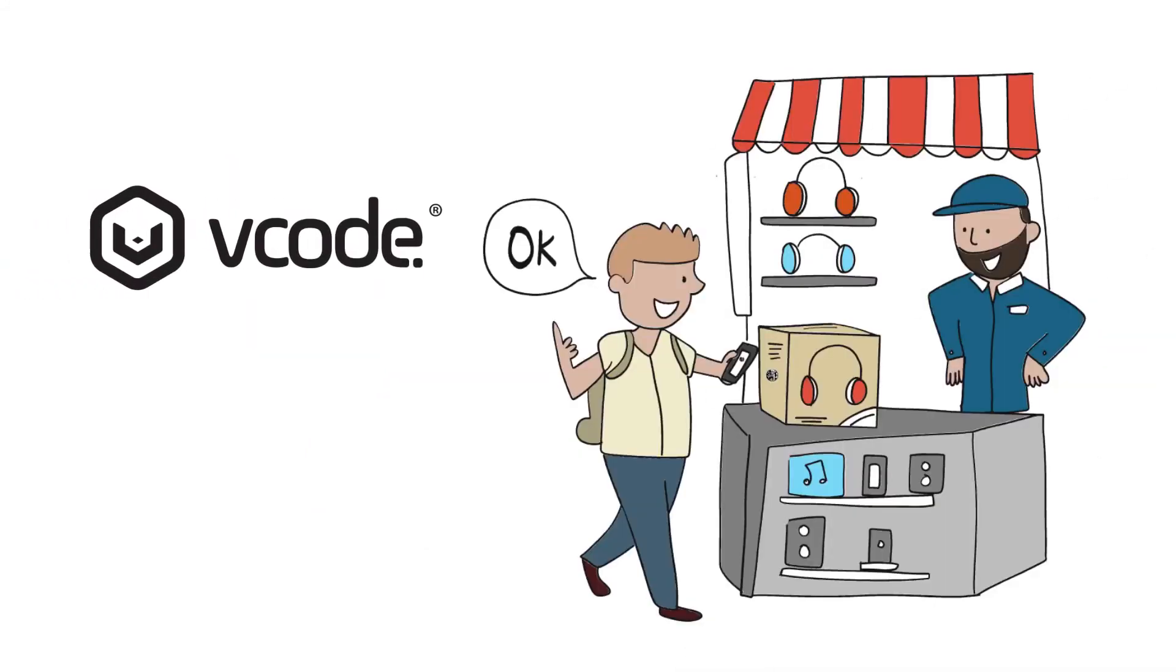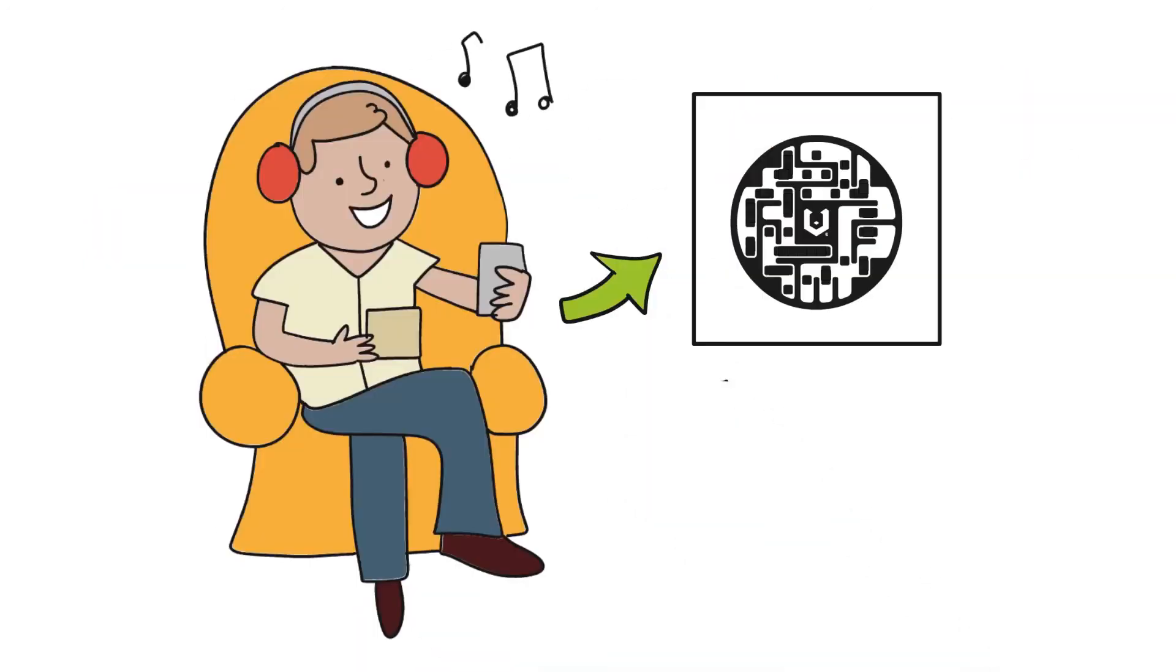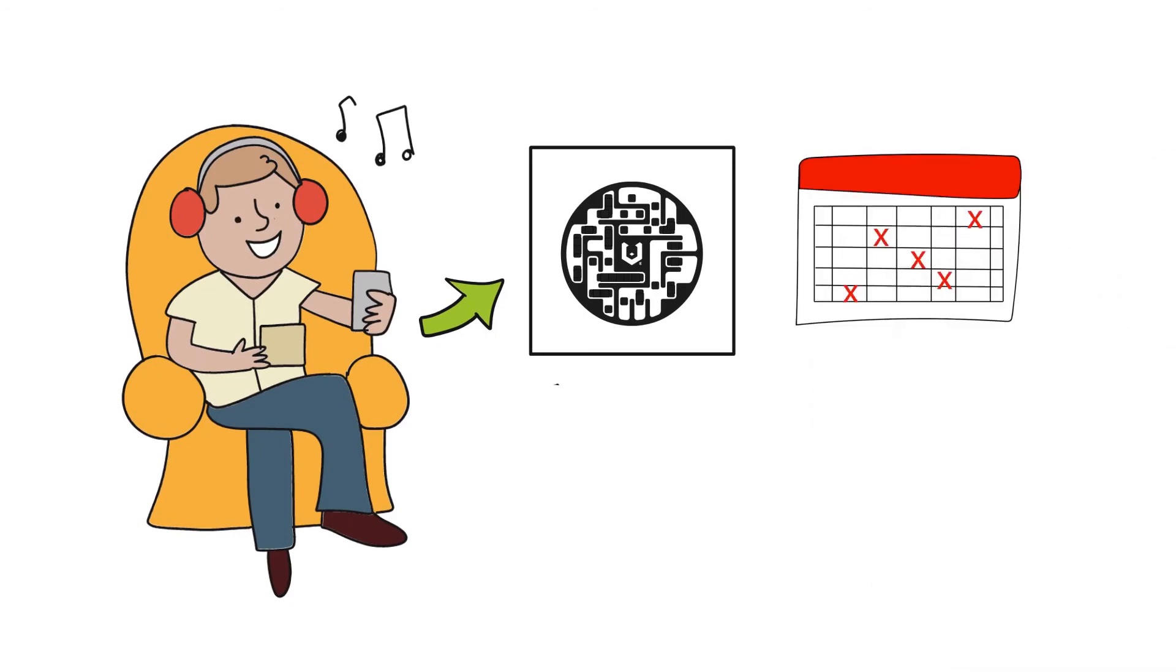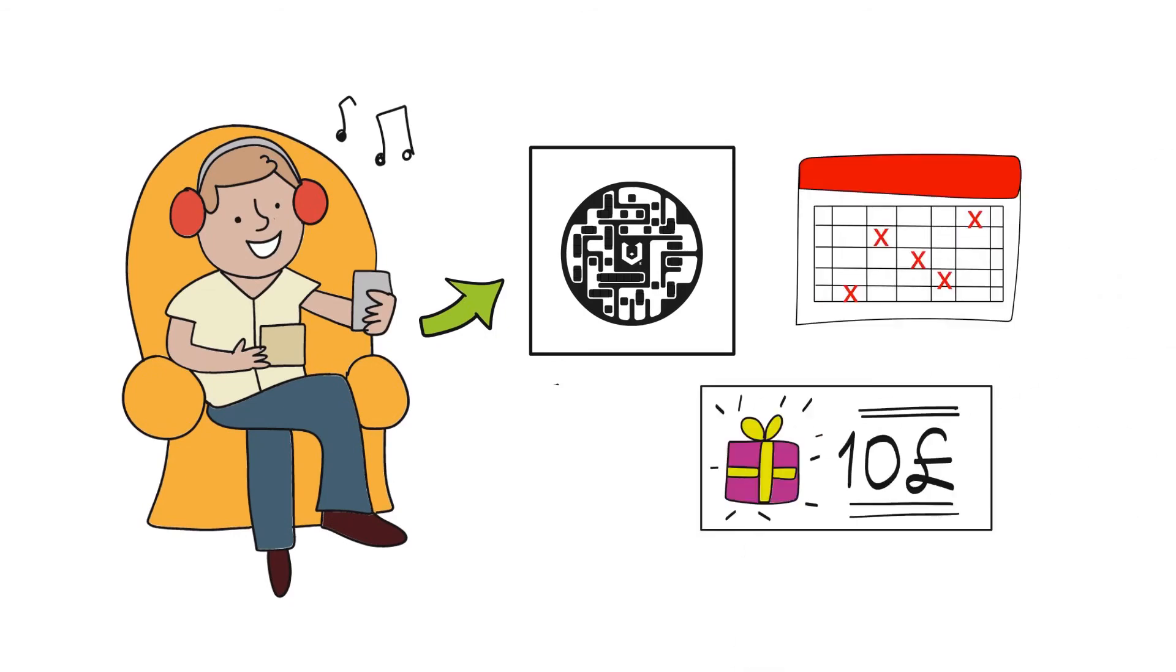After the user checks the authenticity of the product and purchased it, the user can periodically scan the item's vCode and be delivered new promotional information and rewards from the manufacturer based on their own demographic.